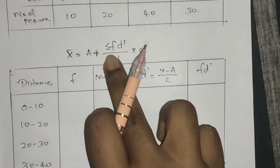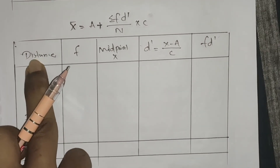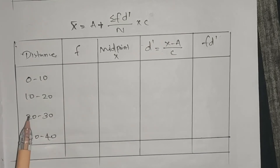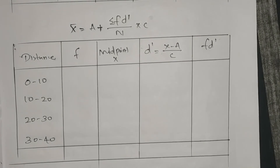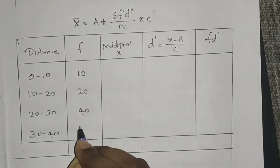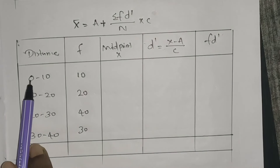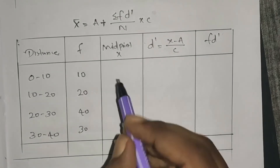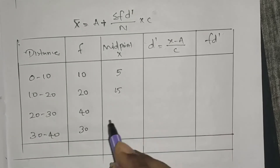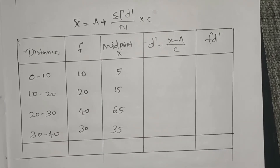We set up the table with classes 0 to 10, 10 to 20, 20 to 30, 30 to 40, and frequencies 10, 20, 40, 30. The midpoints are calculated as: (0+10)/2 = 5, (10+20)/2 = 15, (20+30)/2 = 25, (30+40)/2 = 35. This gives mid values x = 5, 15, 25, 35.